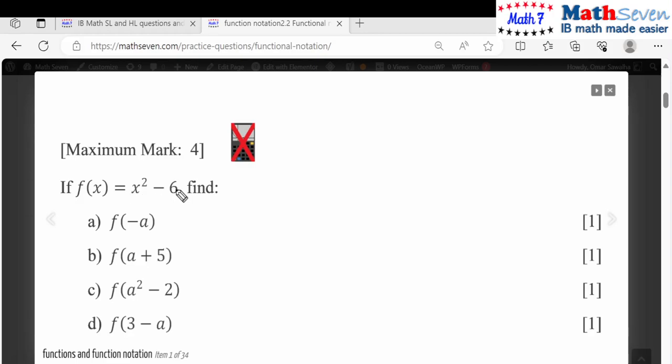So if you have f of minus a, just simply put instead of x minus a. So this will become f of minus a equals, don't forget the brackets, minus a squared minus six.